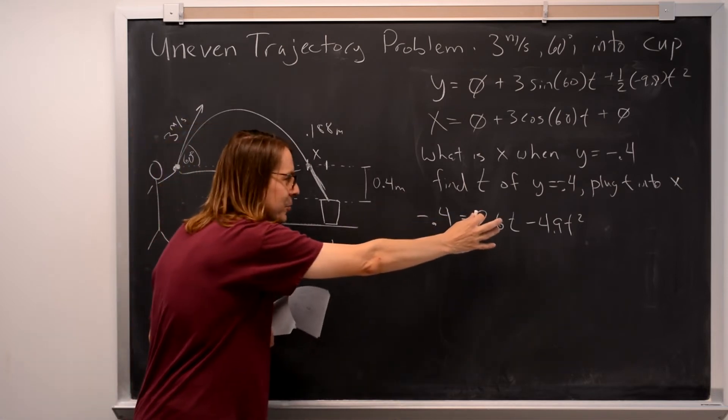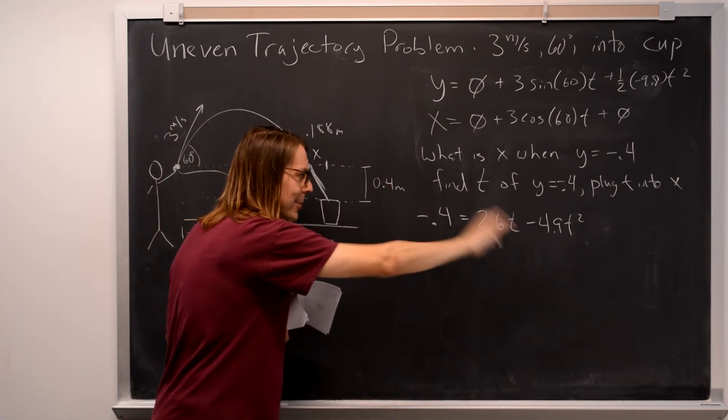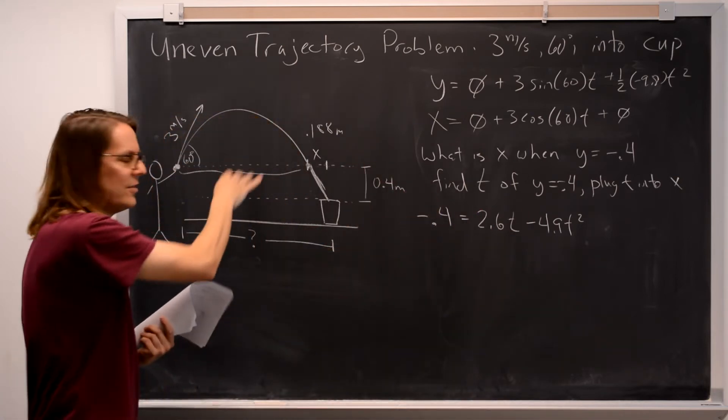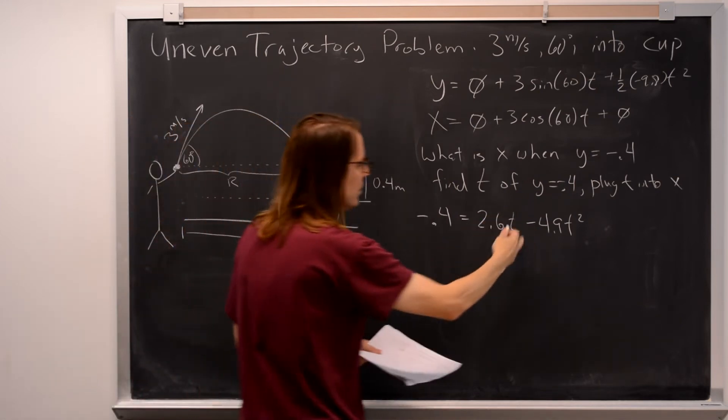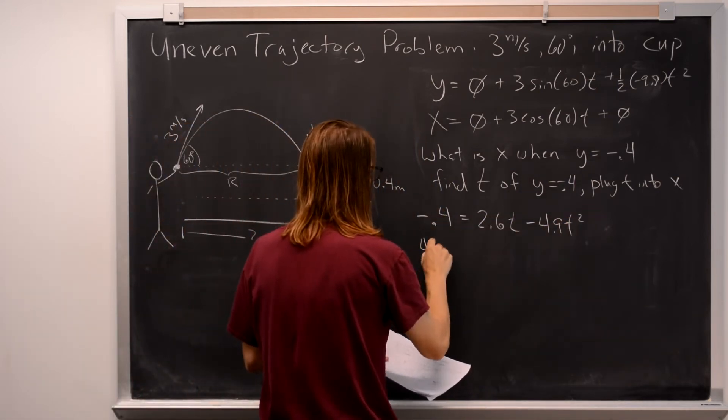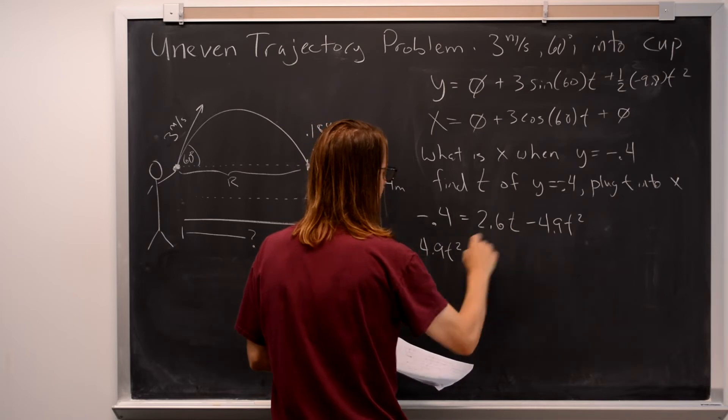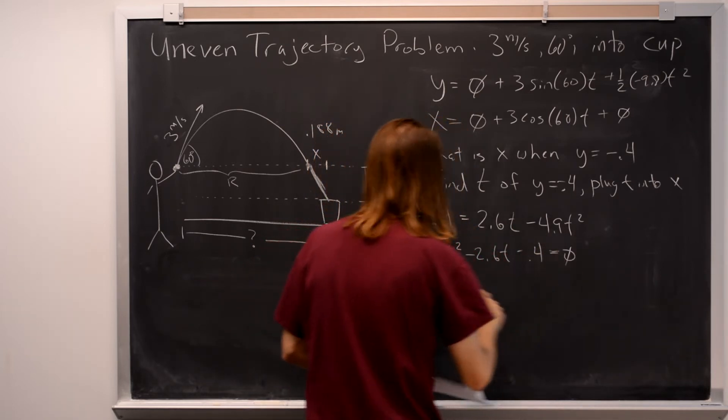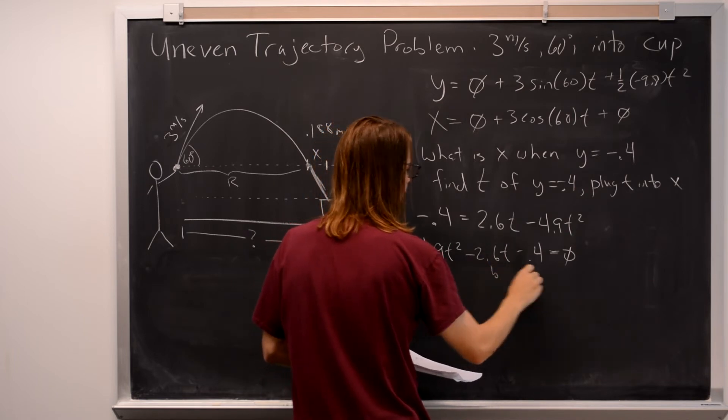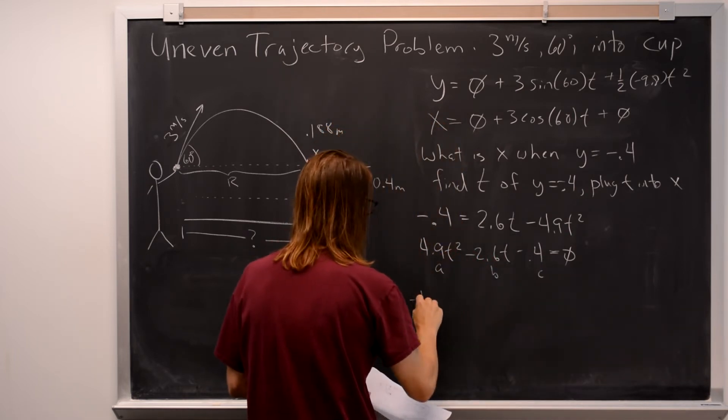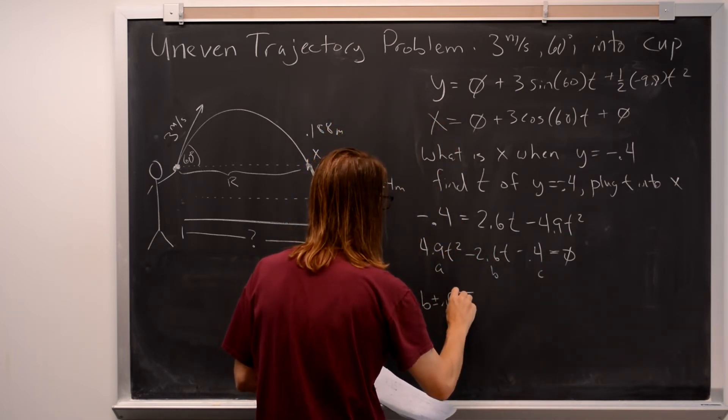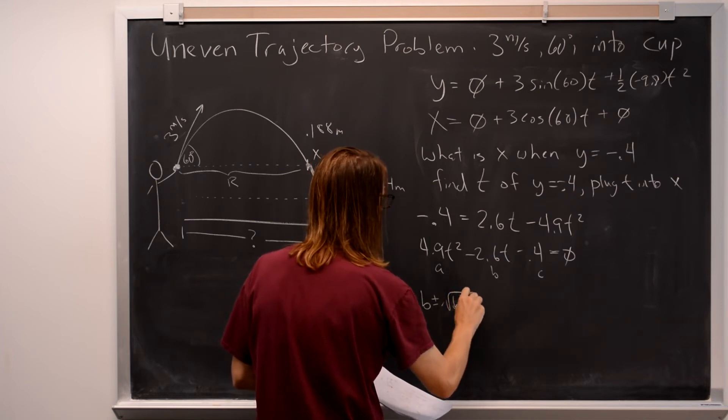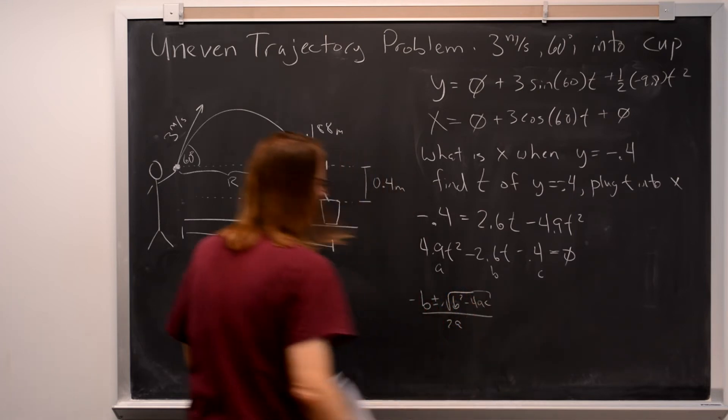That's part of the reason I didn't do it this way in class, is it's just a brute force mathematical thing to do. It doesn't give you the insight. Well, let's go ahead and do it. So, I'm going to put this over here and call it 4.9 t squared minus 2.6 t minus 0.4 equals 0. There's a, there's b, there's c, and it's a minus b plus or minus the square root of b squared minus 4ac over 2a.